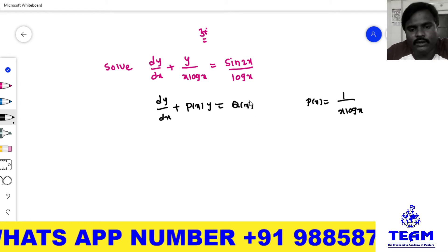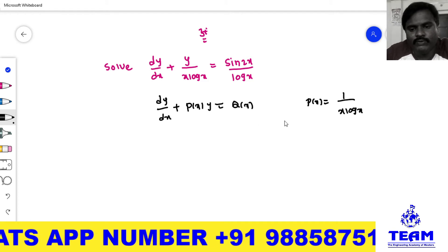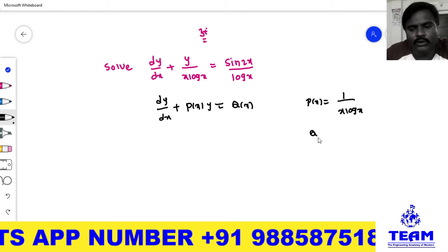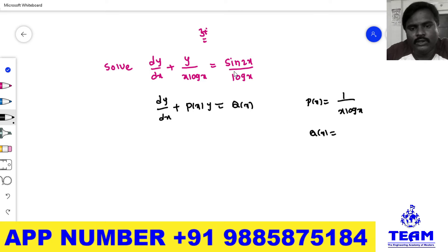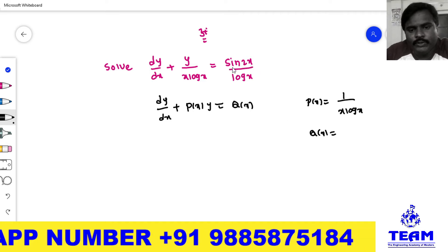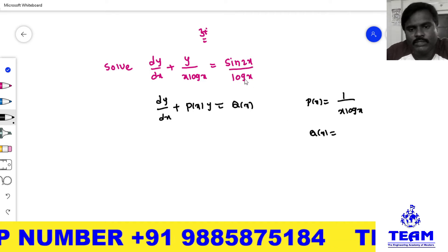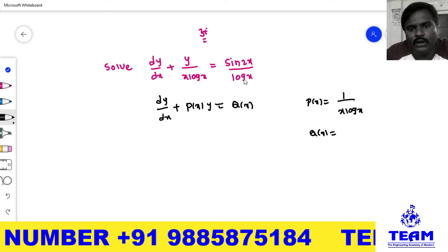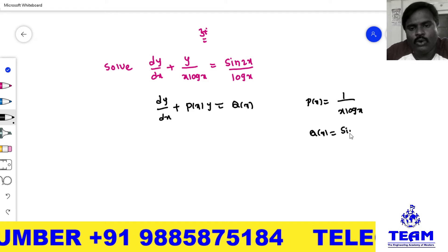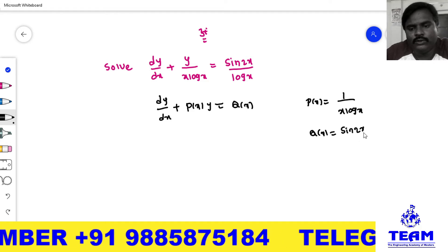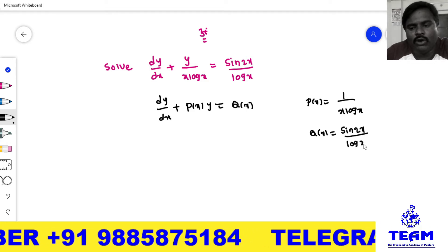Next, the right side should be in terms of x alone. That is, we denote Q(x) = sin(2x)/log(x). Is it in terms of x alone? Yes. So Q(x) = sin(2x)/log(x).